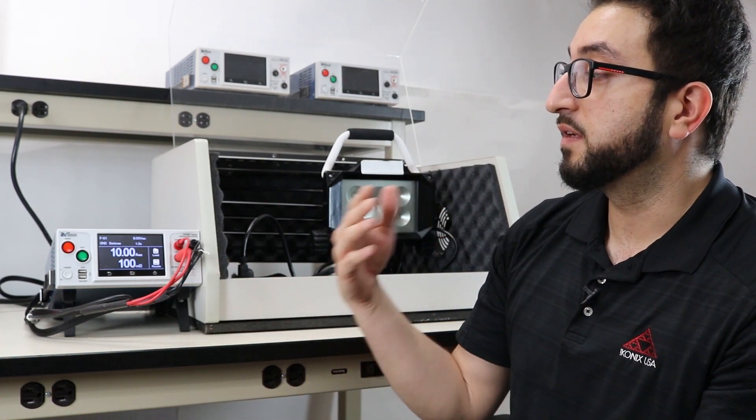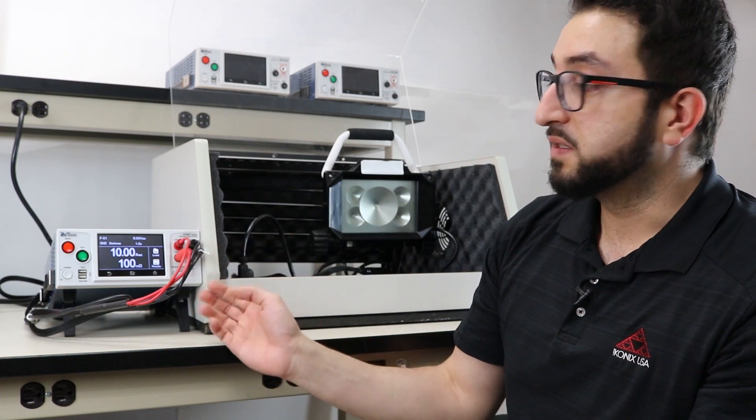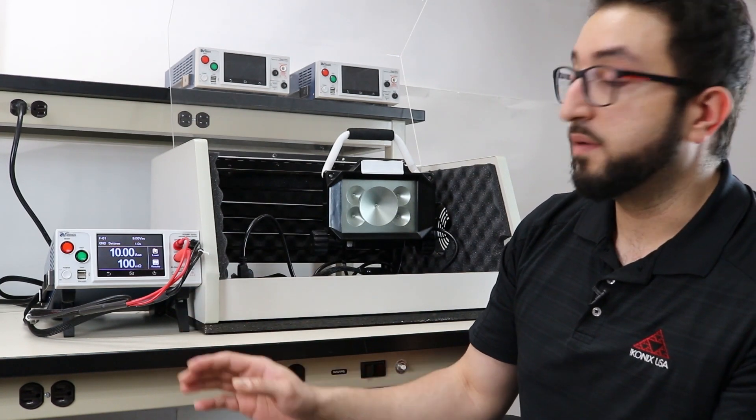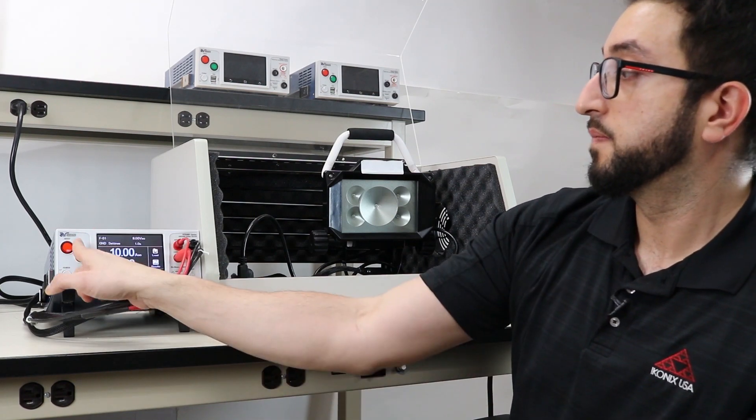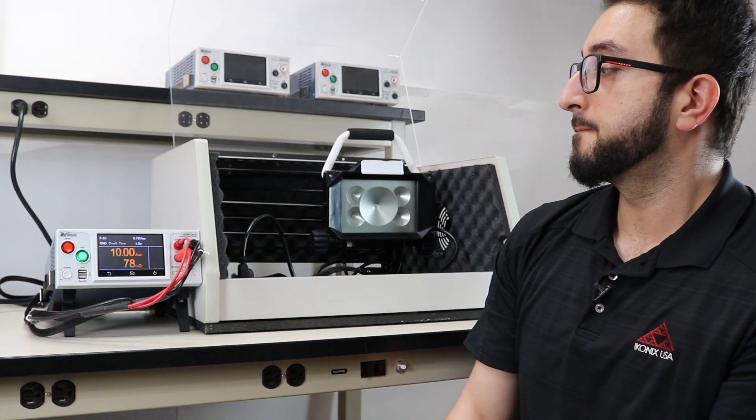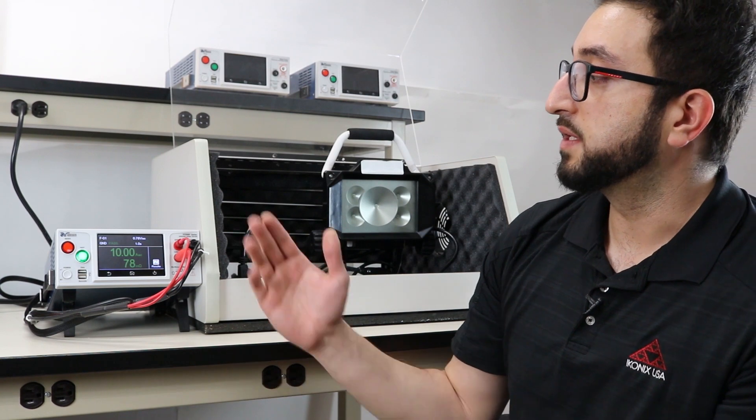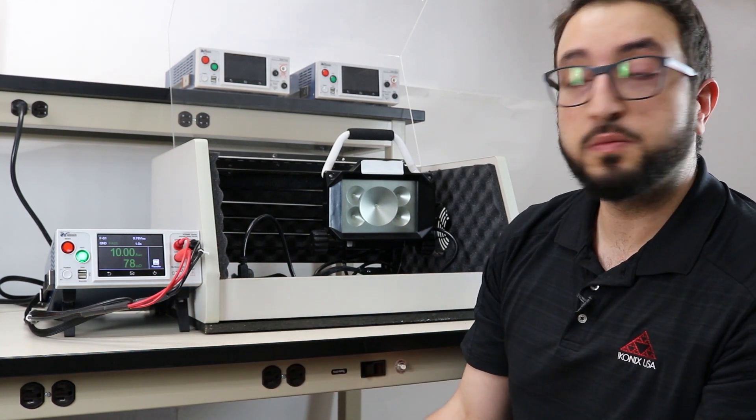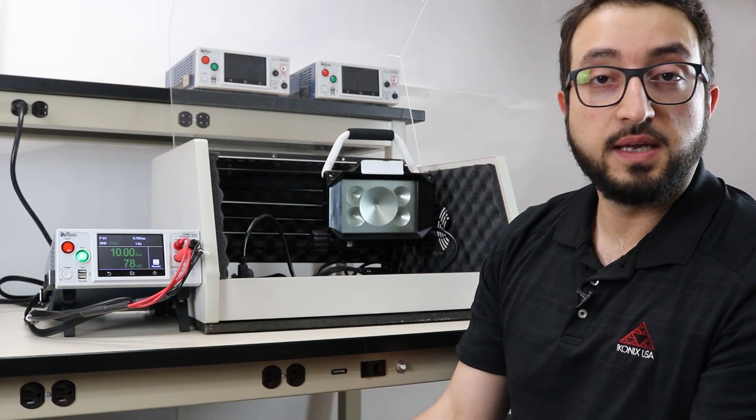So now when I run the test, if the measurement exceeds the 100 milliohms this should result in a failure, and if it doesn't then we will have a pass ground bond test. As you can see on the screen, the resistance measured was about 78 milliohms and that indicates a pass.